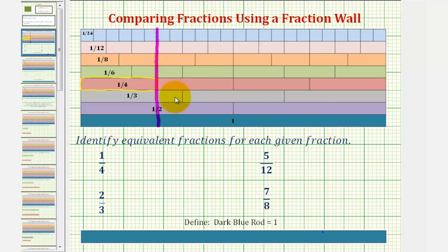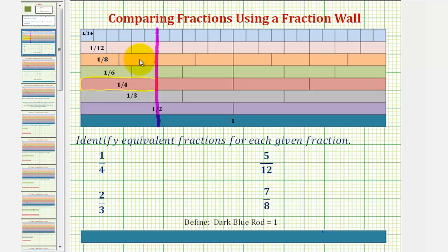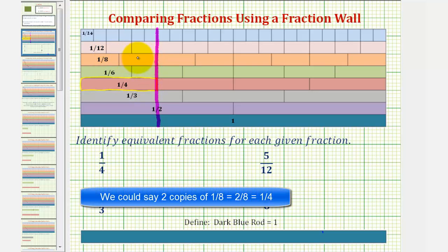Looking at our fraction wall, this indicates we can determine an equivalent fraction with a denominator of eight, twelve, and twenty-four. It takes two rods of length one-eighth to have the same length as a one-fourth rod, which indicates that two-eighths is equivalent to one-fourth.